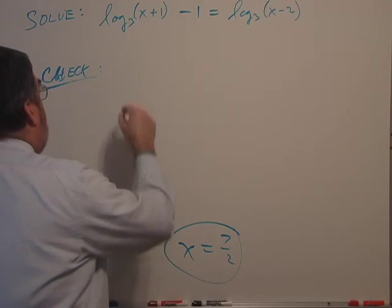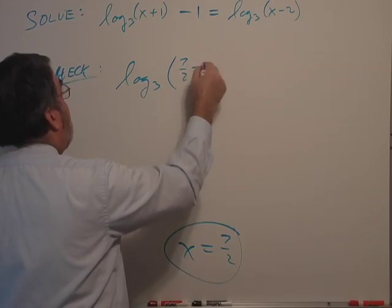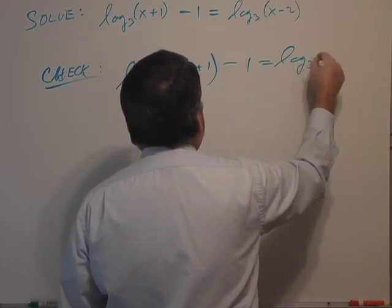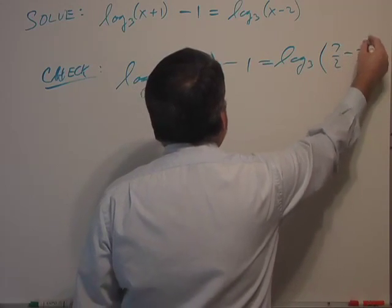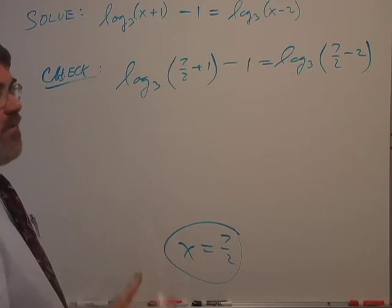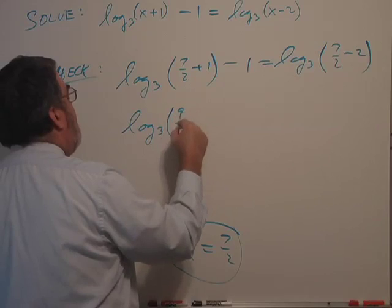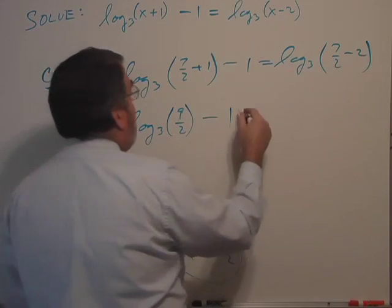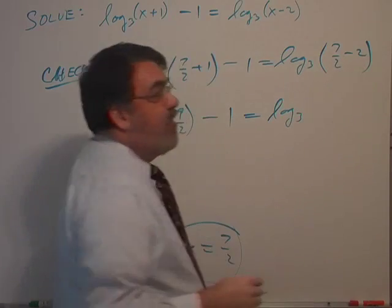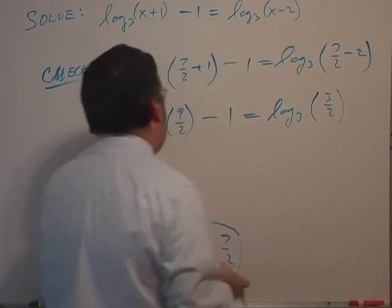So we'll check. And I've got the log base 3 of 7/2 plus 1, minus 1, equals log base 3 of 7/2 minus 2. Now 7/2 plus 1 would be 7/2 plus 2/2, that's 9/2. So this is the log base 3 of 9/2 minus 1. And here I've got the log of what? 7/2 minus 4/2 is 3/2.